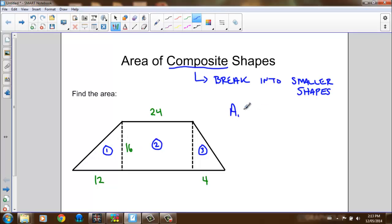So the area of the first shape, being a triangle, would have an equation of base times height divided by 2. The base of this triangle is 12 units, the height is 16. I multiply those two numbers together and divide by 2. So 12 times 16 divided by 2 gives me an area of 96 units squared.